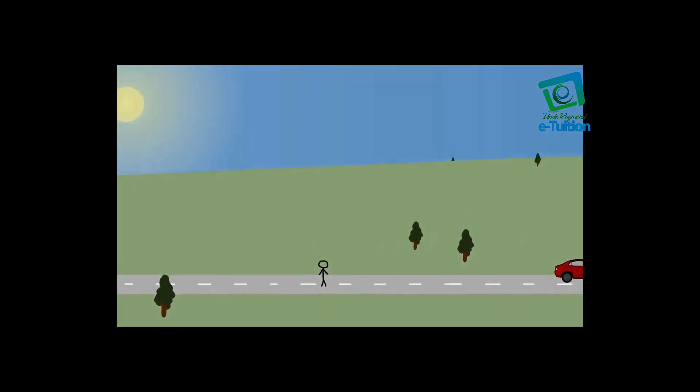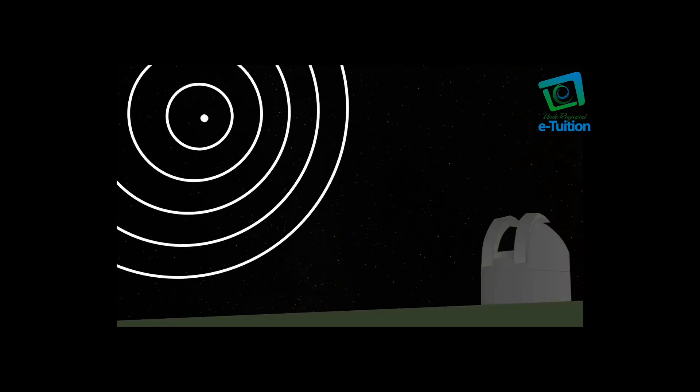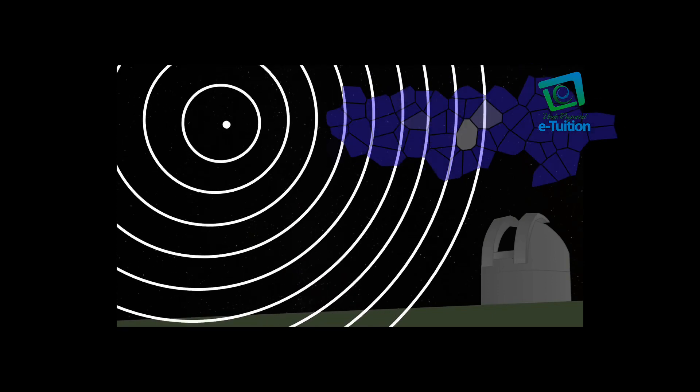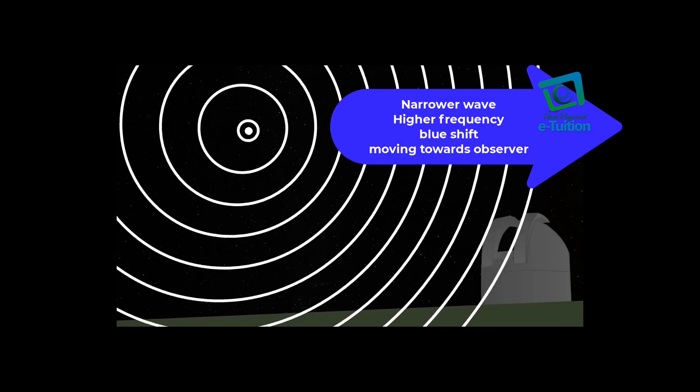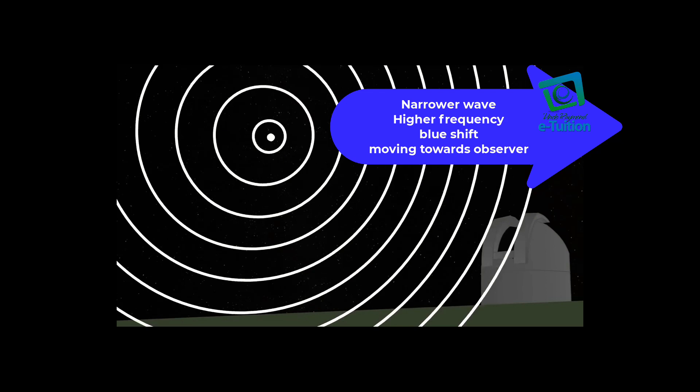Now, that's how Doppler effect works with sound. It also affects waves such as light. Let's say you look out at your observatory and you see a star. Just like the car's sound waves, if the star is moving towards you just a little bit, the light waves that it emits will be bunched up, meaning that you will see the light at a higher frequency than it actually is.